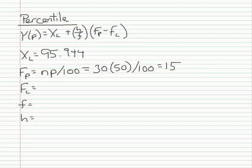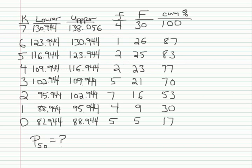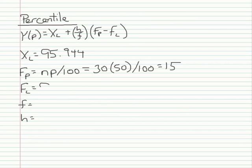Next, I need to find f sub l, which is the frequency of scores below x sub l. To find f sub l, I need to go to the interval that contains my percentile point, which was the third interval. I need the frequency of scores below this interval. So that's going to be 9.